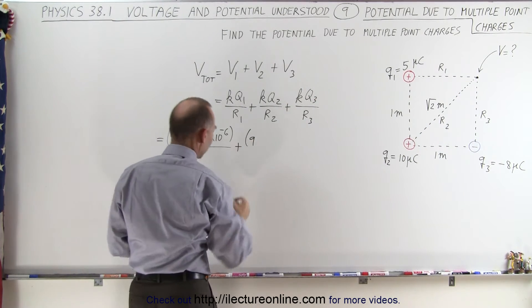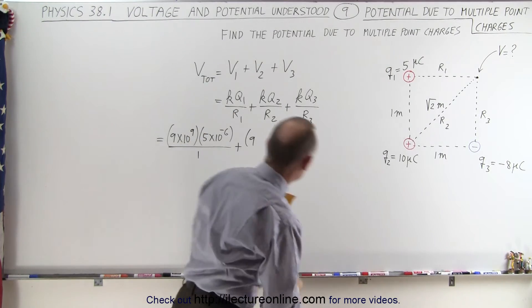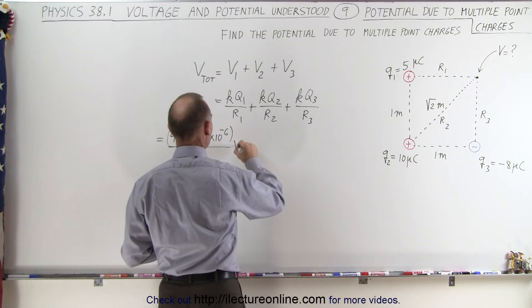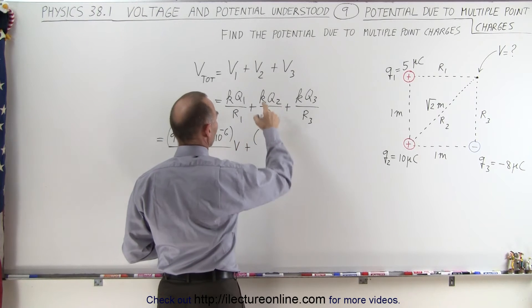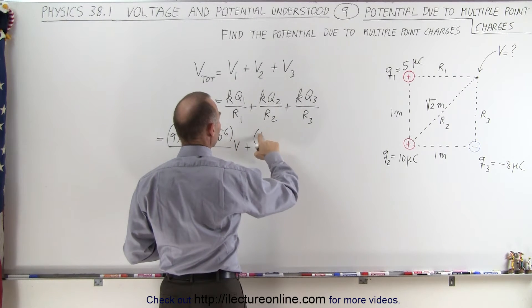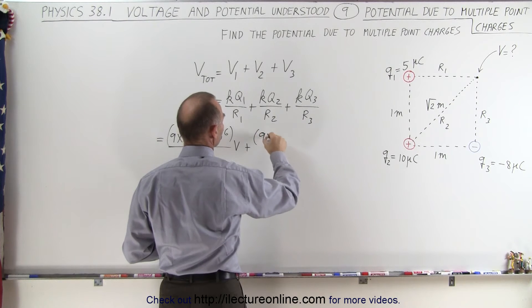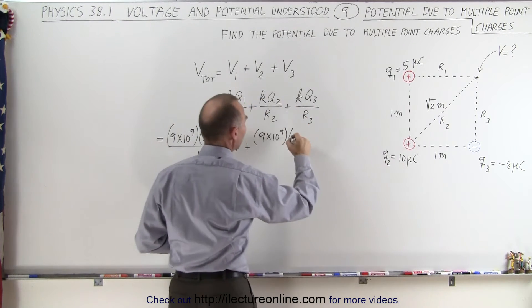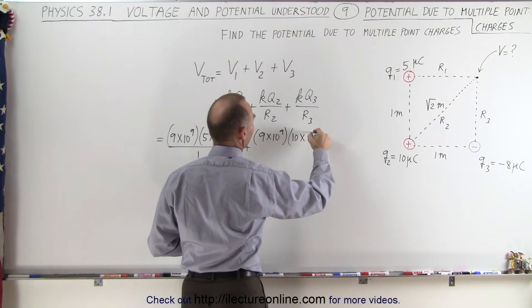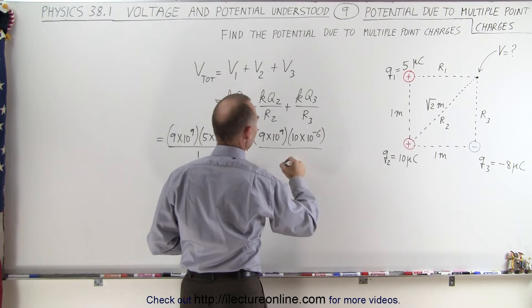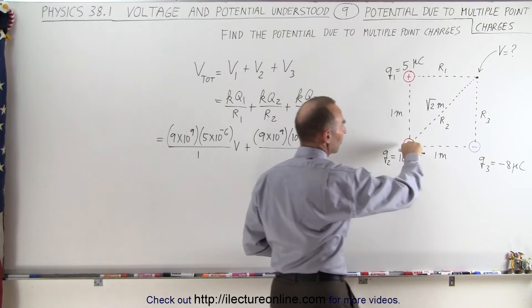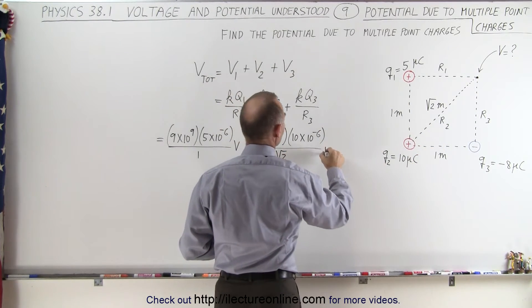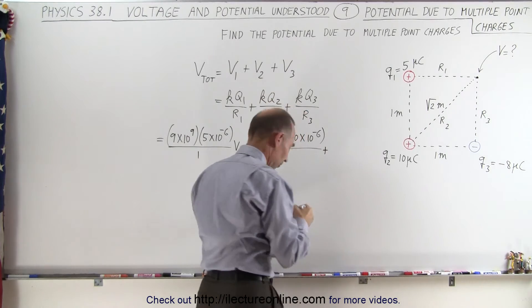Plus 9 times 10 to the 9th - why not just put in the units at the end here in terms of volts - so plus 9 times 10 to the 9th, Q2 is 10 microcoulombs, all divided by the distance. Now in this case, the distance is the diagonal line, so it's going to be the square root of 2.